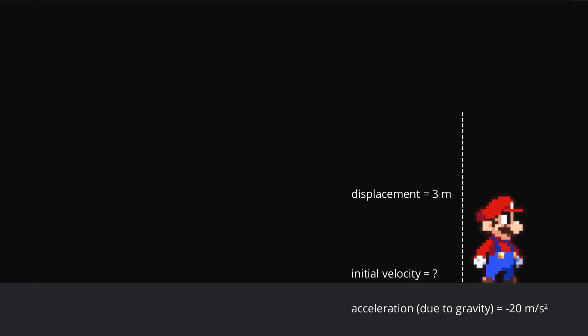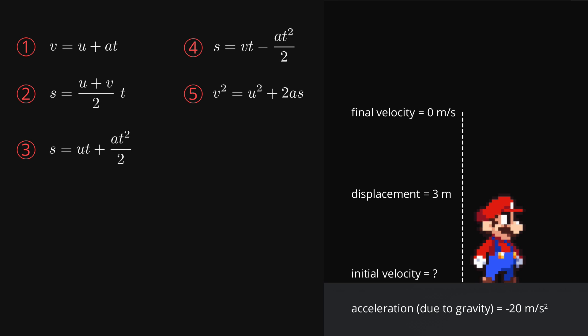Remember that we need three pieces of information in order to calculate the unknown, so we need to find one more known value. As it happens, we know the final velocity here, since at the very peak of the jump the character will be moving neither up nor down, and so we can say that the final velocity is 0. Now we just need to find the equation that uses the four variables we're interested in, which are s, u, v, and a. And as you can see, the only equation that has this combination is number 5.